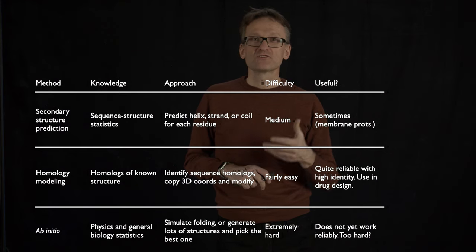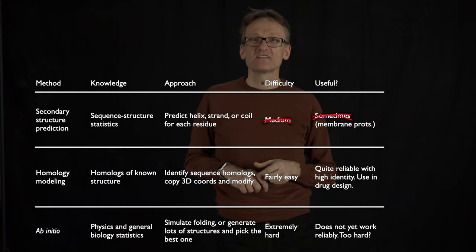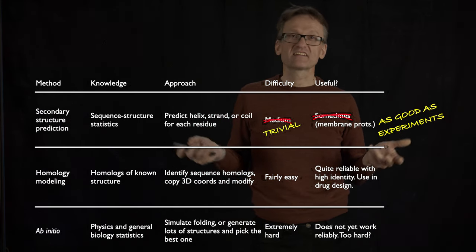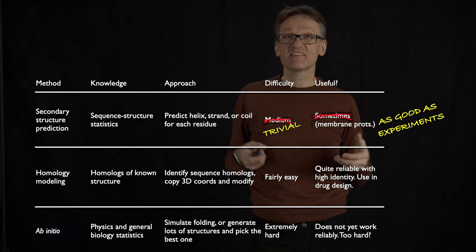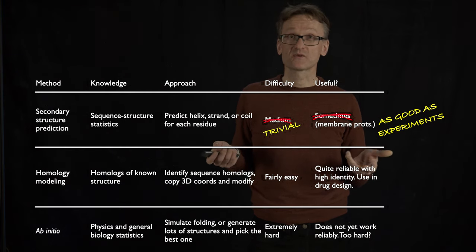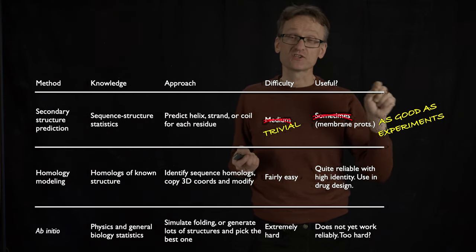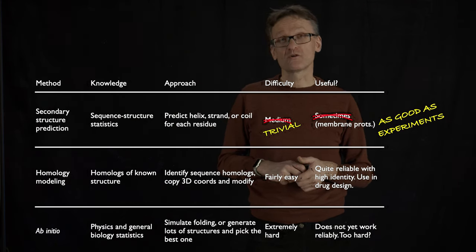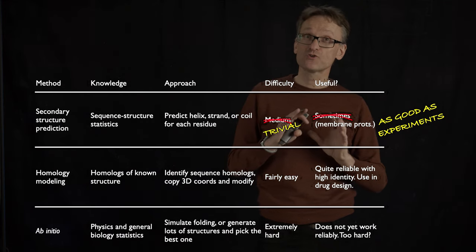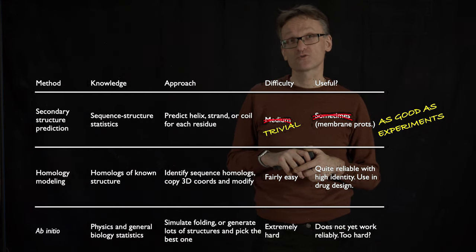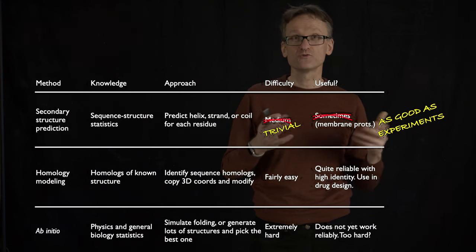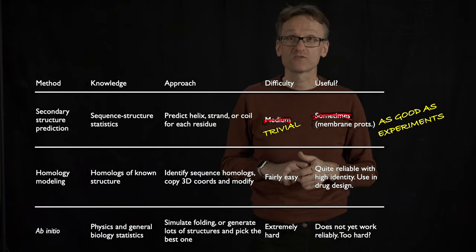Secondary structure prediction, it's not true that is of medium difficulty anymore. This is trivial. There are many methods here that get kind of 90% accuracy, and that's roughly as good as experiments are, because there will always be some minor deviations in loops or so. This is not even a problem anybody's working on anymore. It's literally cracked. And that's amazing. I will show you just a slide or two about it for historical accuracy, but it's really not worth spending much time on. Here, we just use the server and we're happy the problem is solved.